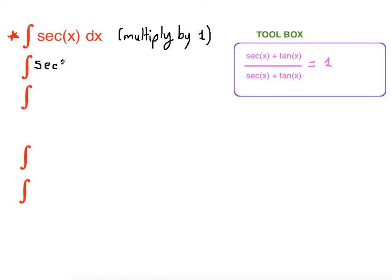Secant x times secant x plus tangent x over secant x plus tangent x dx.